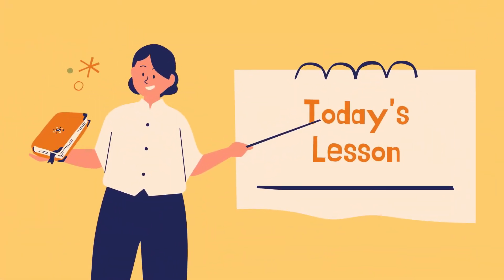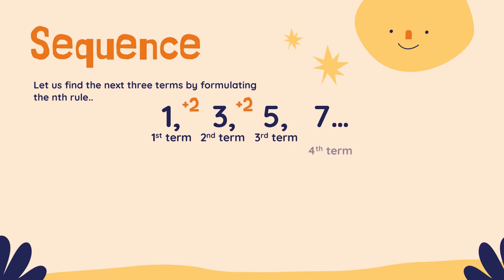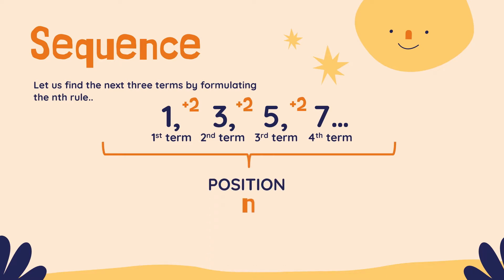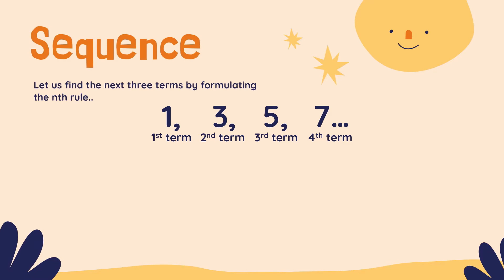Now, let us start today's lesson. Let us try a sequence and find the next three terms by formulating the Nth rule. Our sequence is: 1, 3, 5, 7. The first term is 1, the second term is 3, the third term is 5, and the fourth term is 7. As you can see, the common difference is 2. Let us represent position as the letter N. So the pattern here adds 2, and we are going to use the formula 2N, or 2 times N.